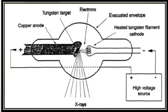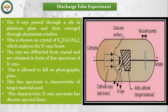The rays produced travel in all directions. When these rays were studied, they were identified as X-rays. The X-rays pass through a platinum slit, then go through an aluminum window, and fall onto a potassium ferrous cyanide crystal so they can be analyzed. These rays showed diffraction and produced a line spectrum. When they fall on a photographic plate, they also produce an image.